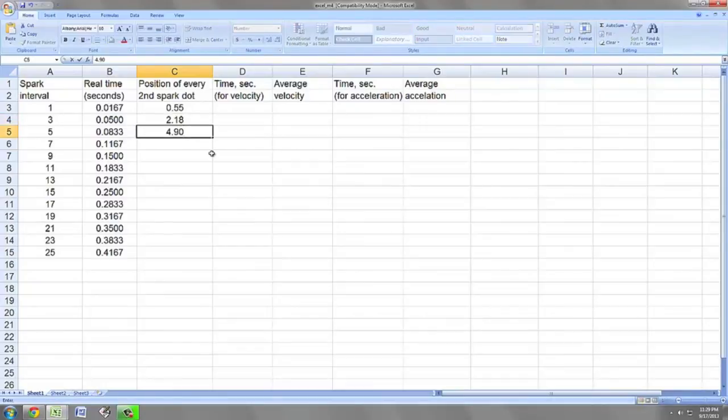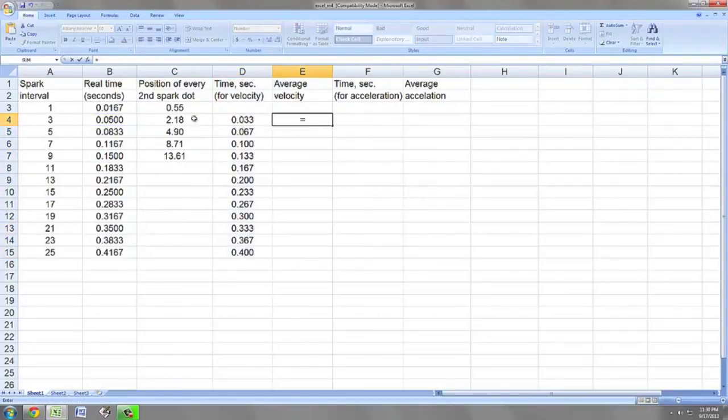To proceed, plug in the data from the distance between the position of the dots. Enter the formula in the velocity column and then drag it down to get all the values. You can similarly get the acceleration figures.